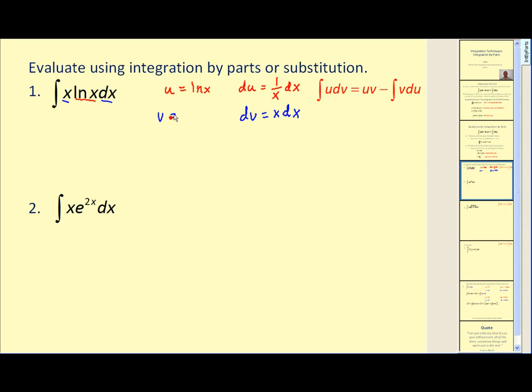And in order to find v, as we just showed on the previous page, we'll integrate both sides. If we integrate this, we'll get v. If we integrate x dx, we'll get x squared divided by two. And again, we'll leave the plus c off for right now.